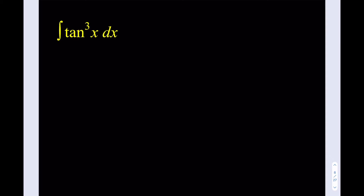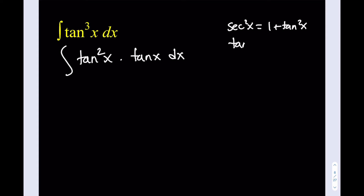A lot of times we use the same method with sine and cosine — if you have an odd power, you separate one of them to save it for du, and then the rest becomes a perfect square you can rewrite. For example, cosine squared can be written as 1 minus sine squared using the Pythagorean identity. So with odd powers we separate one, and here we write tangent cubed as tangent squared x times tangent x. We're not using u-substitution directly; rather, we use the relationship: tangent squared equals secant squared x minus 1.